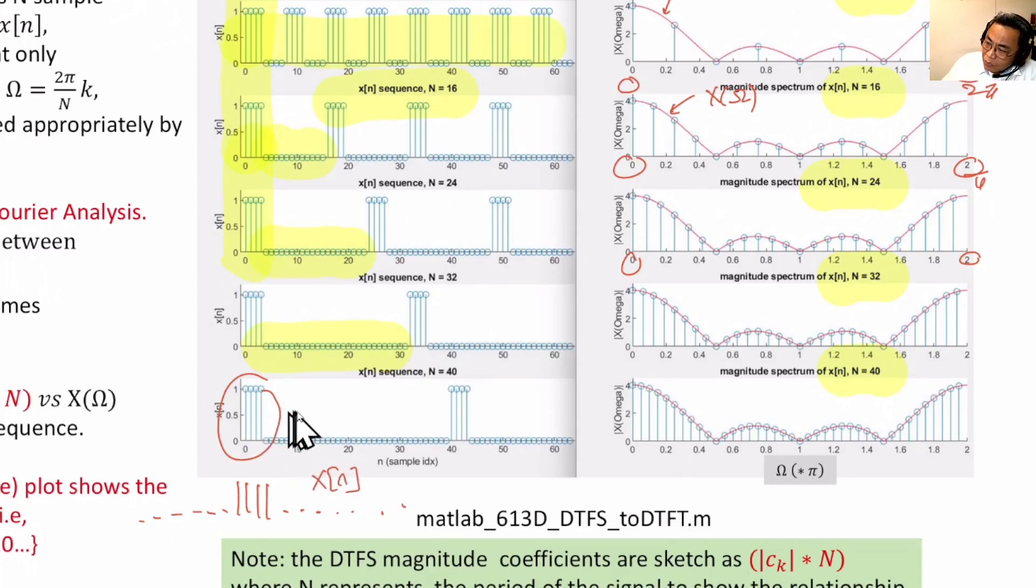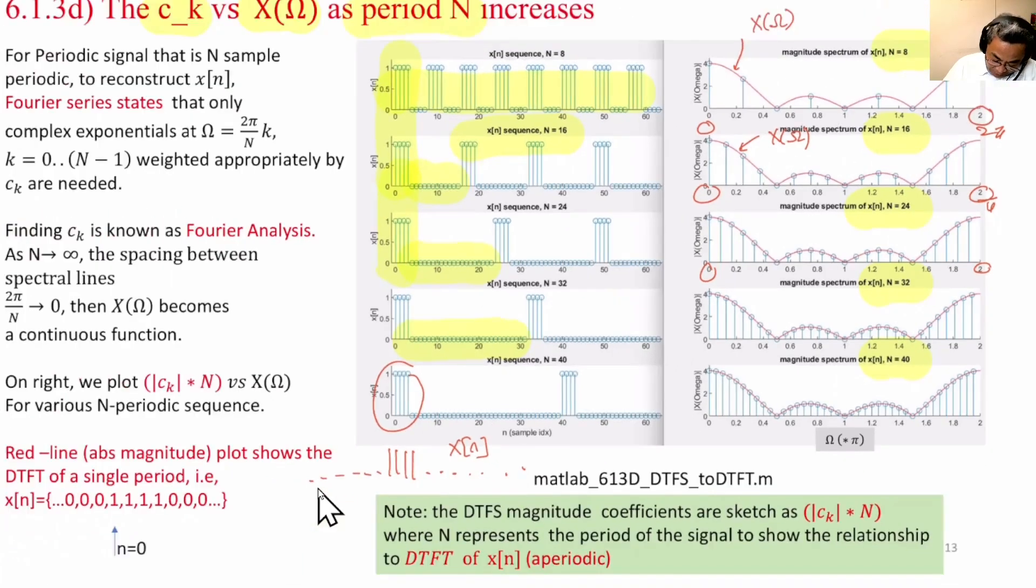Now, you see that as we are stretching our periodic signal with more and more zeros, doesn't this signal approach X of n? And at infinity, they become the same. So there must be a very close relationship from the Ck's calculated to X of omega.